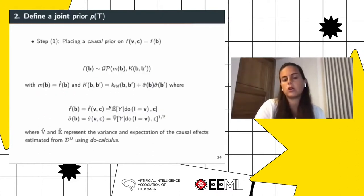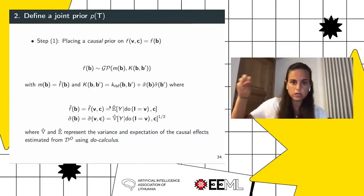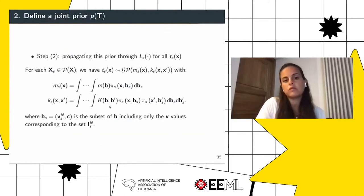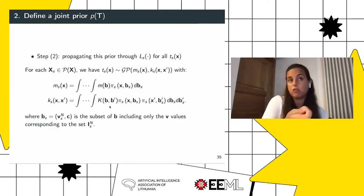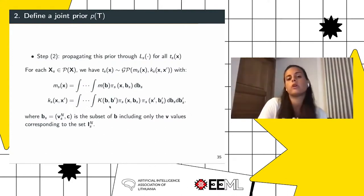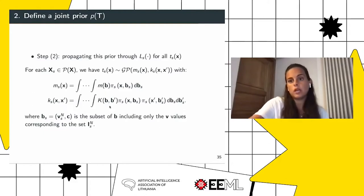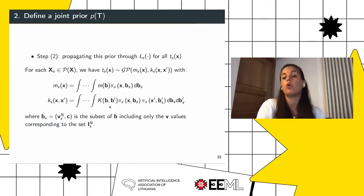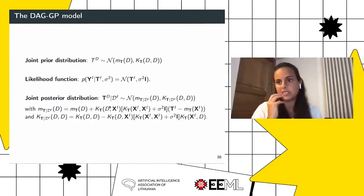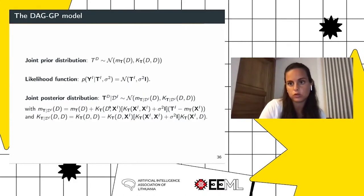We construct a causal GP prior using the do-calculus and observational data for the base function, then push it through the integral operator. Because of the linearity of the integral operator, we obtain GPs for all remaining functions with parameters determined not only by data observed for a specific set, but by data observed for all remaining sets. Through this construction, we define a consistent prior and exploit all interventional data collected. If you intervene on Z, you update not only the surrogate model on Z but also the surrogate model on all remaining functions including the intervention on X. We still consider a Gaussian likelihood and obtain the posterior distribution via standard closed-form GP regression.